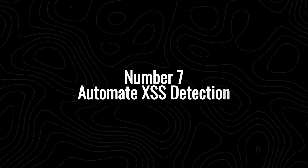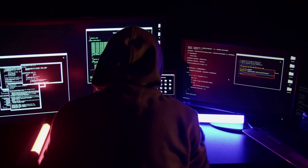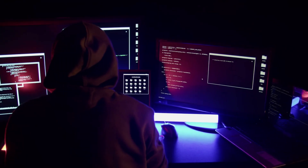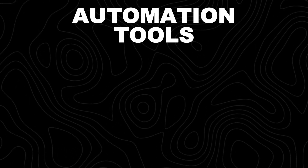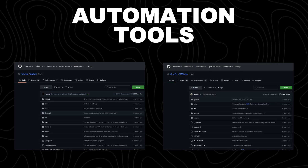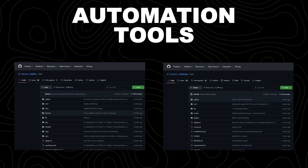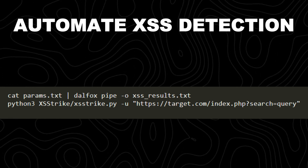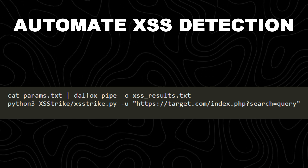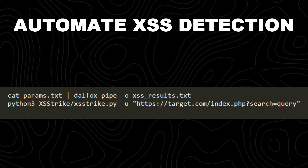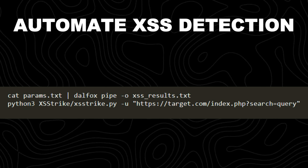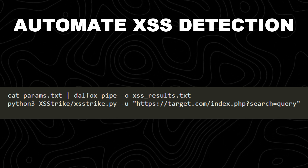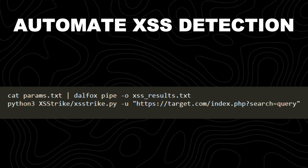Number 7: automate XSS detection. Cross-site scripting, or XSS, is one of the most common web vulnerabilities, allowing attackers to inject malicious scripts into web pages viewed by other users. Instead of manually testing each input field, automation tools like Dalfox and XSStrike can quickly identify reflected, stored, and DOM-based XSS vulnerabilities in web applications. The first command automates XSS detection using Dalfox, a powerful XSS scanning tool. The second command uses XSStrike, an advanced XSS scanner that generates and tests payloads dynamically.